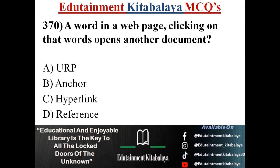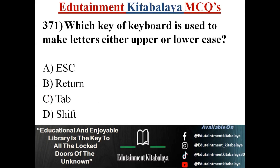A word in a web page — clicking on that word opens another document. What is this called? a) URP, b) Anchor, c) Hyperlink, d) Reference. Correct answer is c) Hyperlink.